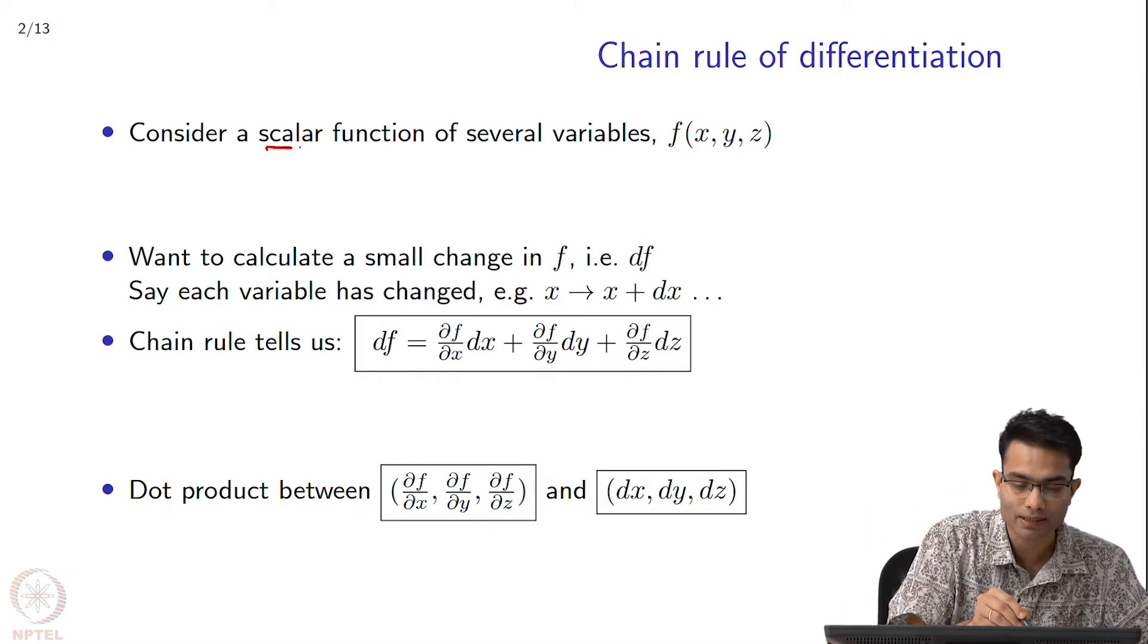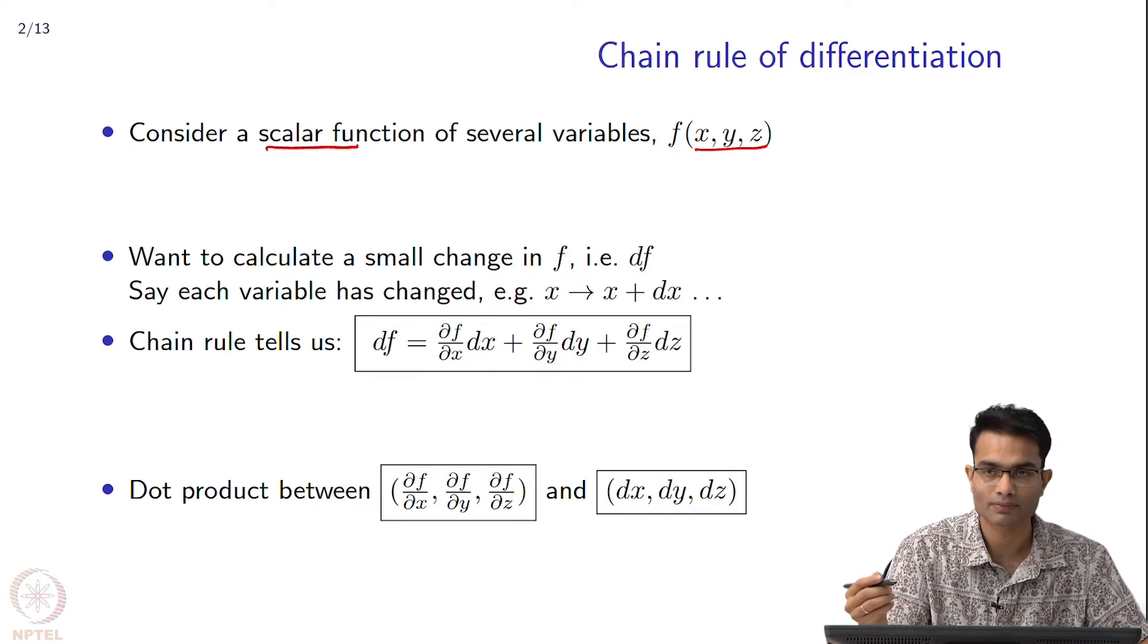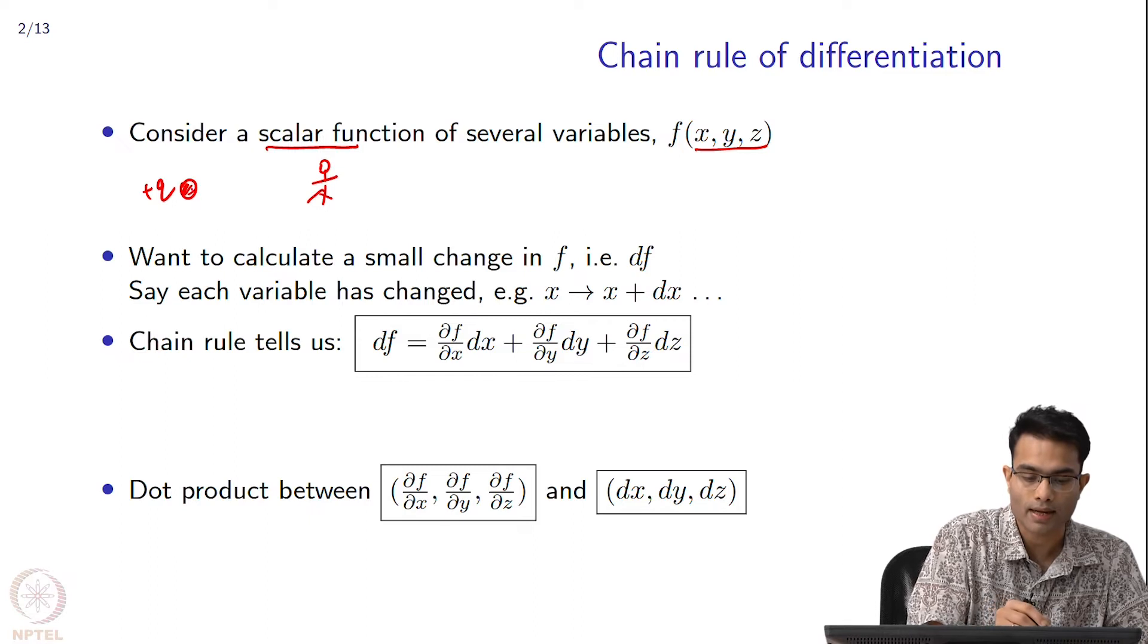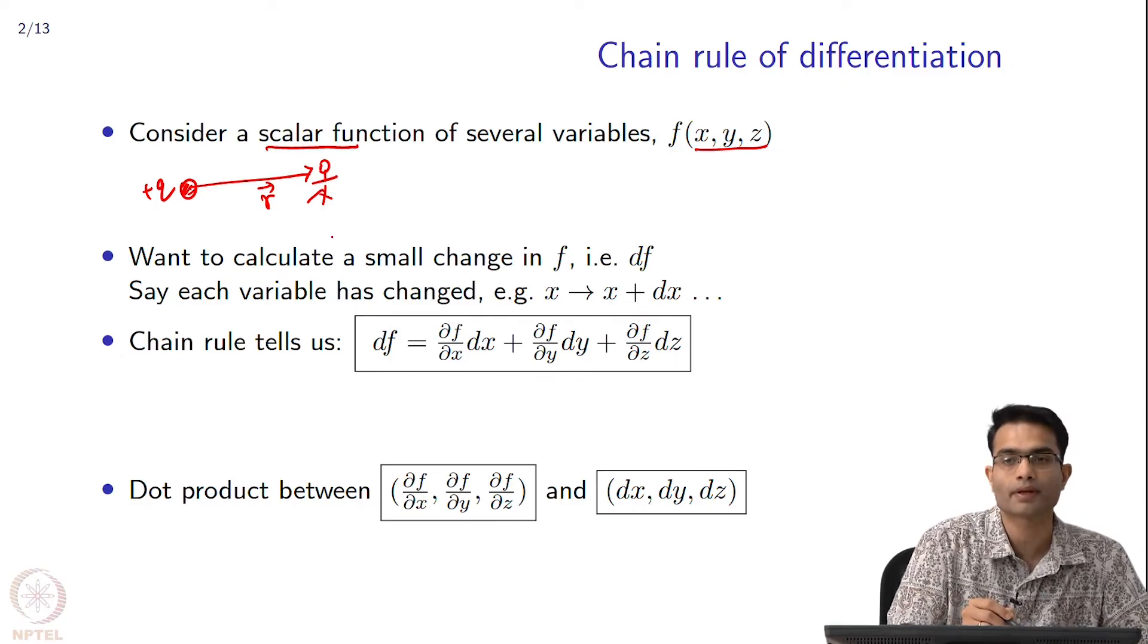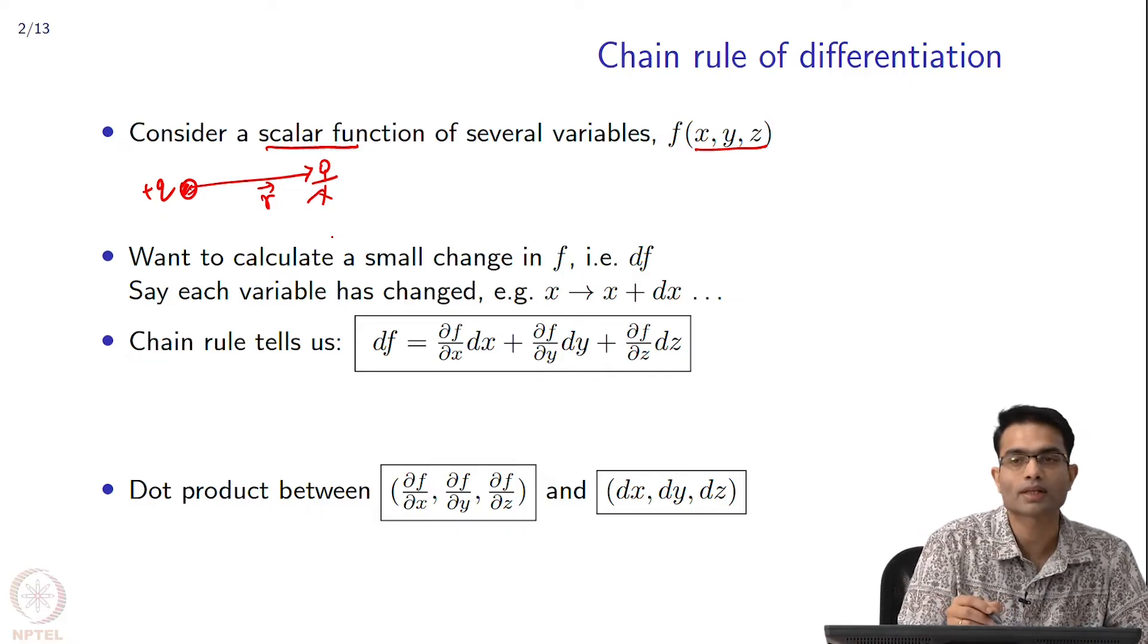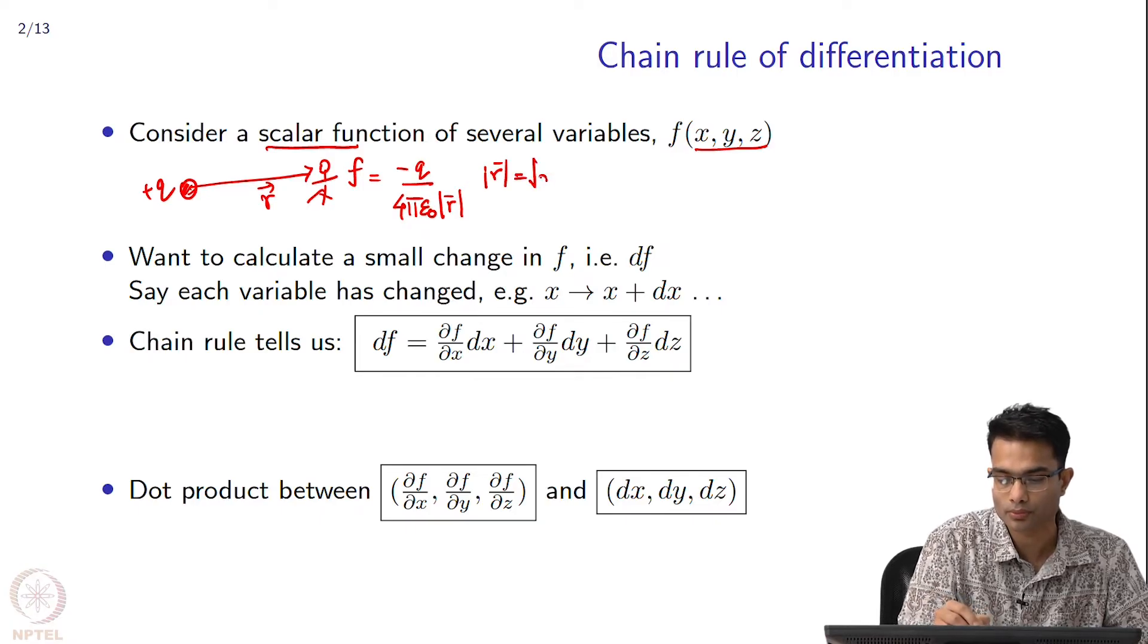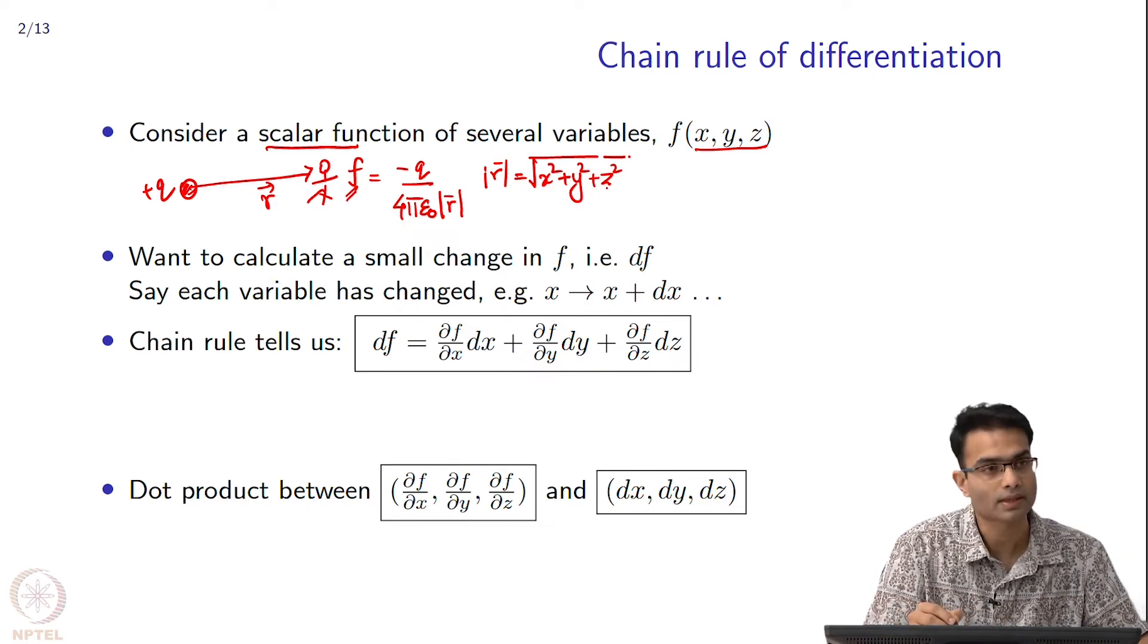Let us start from the beginning. Let us consider a scalar function of three variables. We will stick with three because we live in a three dimensional space; it is easy to visualize. Something simple could be: here is a charge plus q, and I am standing over here. There is a vector r that connects the source to where I am, and this observer could be recording the electrostatic potential. We know from high school that potential is simply given by minus q by 4 pi epsilon mod r, where mod r is square root of x square plus y square plus z square. You have this function f which is a function of three variables x, y and z.